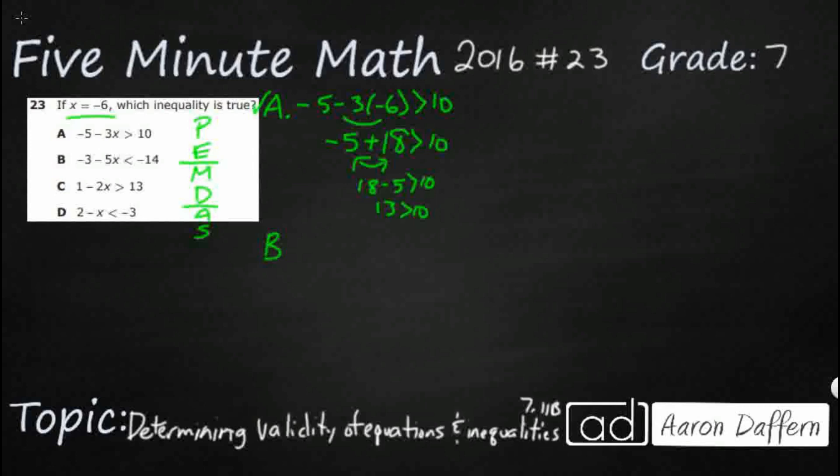Let's check B, C, and D just to make sure that we didn't do something wrong. So let's do substitution again. Negative 3 minus 5x. X is going to be negative 6 again, is less than negative 14. So we've got multiplication again. Two negatives. So let's do negative 3 plus 30. 5 and 6 is 30. Negative and negative is a positive. Less than negative 14.